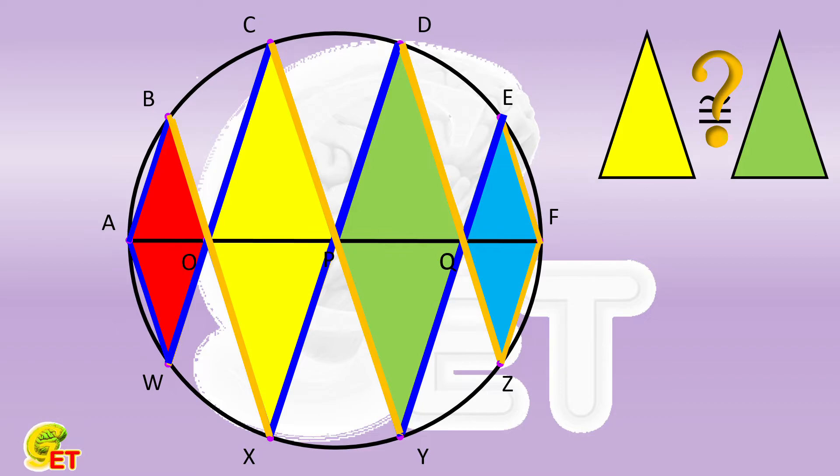Now, we connect BC and ED, respectively. Angle BCW and angle EDZ are the inscribed angles subtended by arcs BW and EZ, respectively.